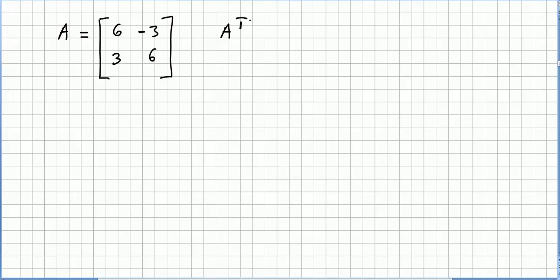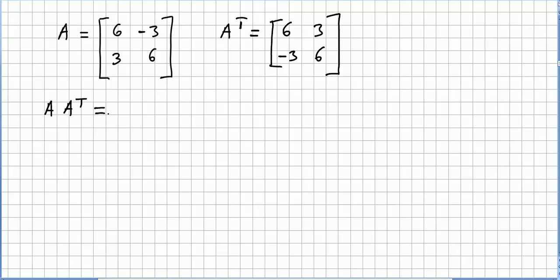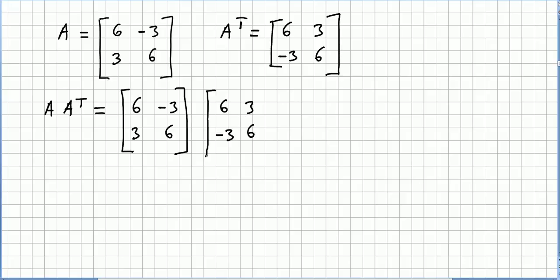First we need the transpose, which will be 6, 3, minus 3, 6. Now we compute A times A transpose. We get 36 plus 9, so 45 in the top-left, 0 in the off-diagonal entries, and 45 again in the bottom-right.